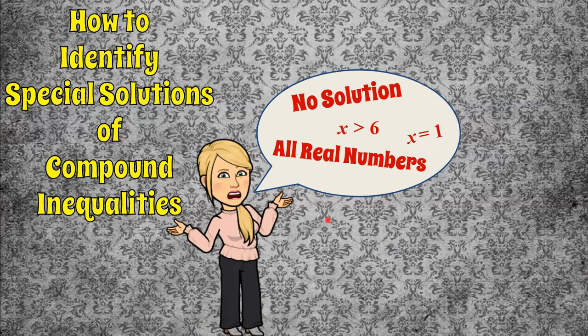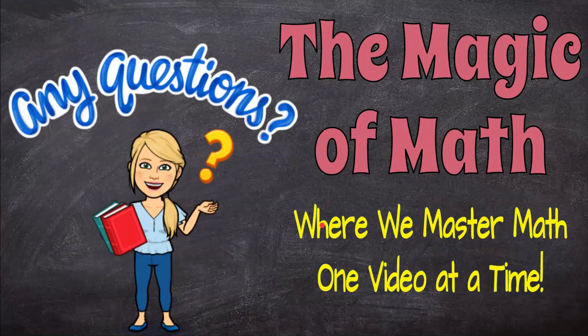And there you have it — that is how you identify special solutions of compound inequalities. Be careful: sometimes you have what you would expect and sometimes you have what you would not expect. But the graph does not lie, so make sure you graph your solutions and look for intersections for AND and unions for ORs. Thanks for joining me today at The Magic of Math, where we master math one video at a time. I hope you will subscribe to my channel. Have a great day.